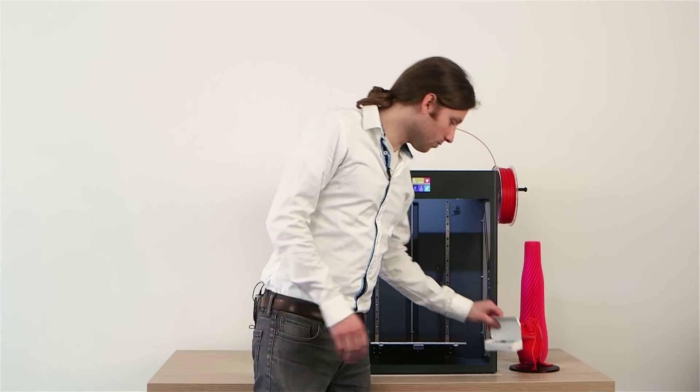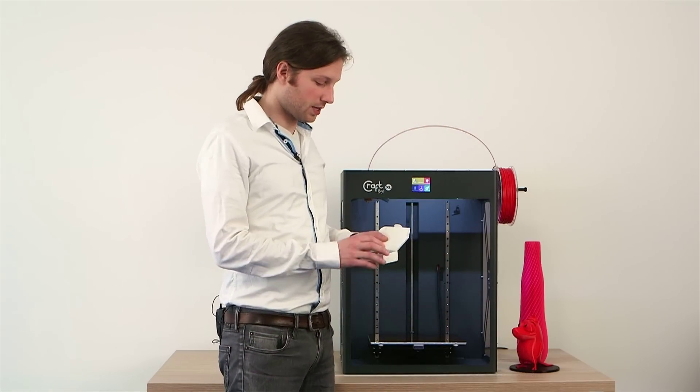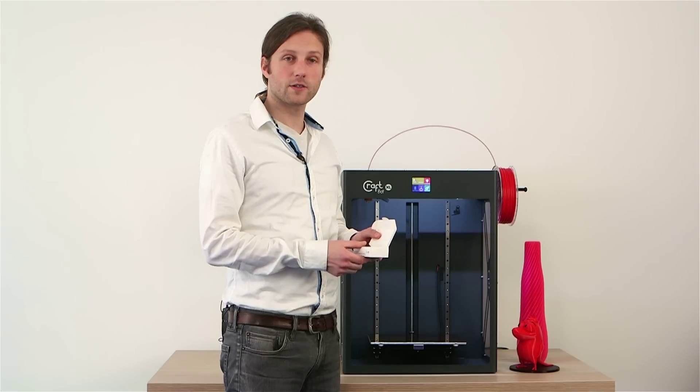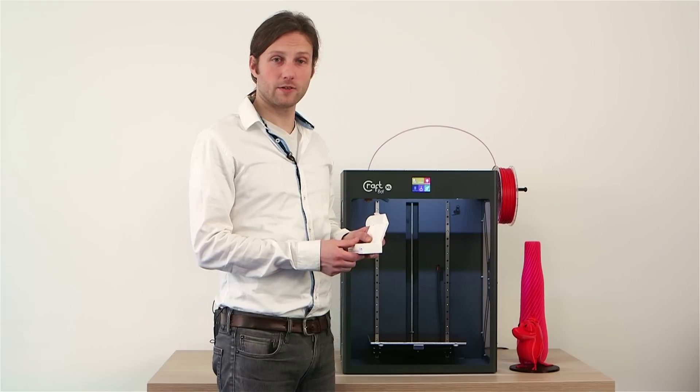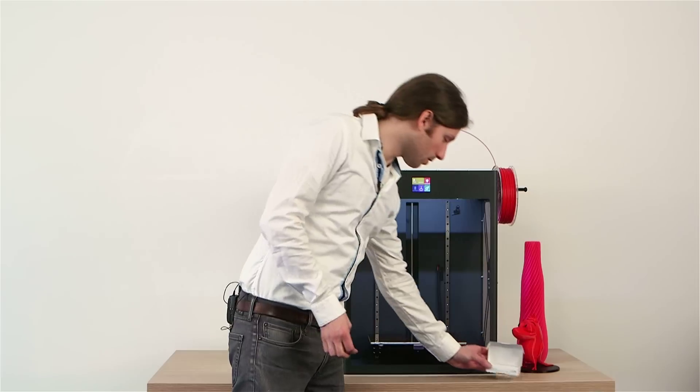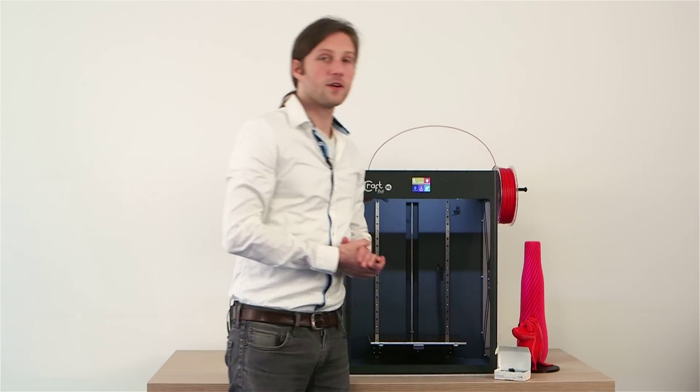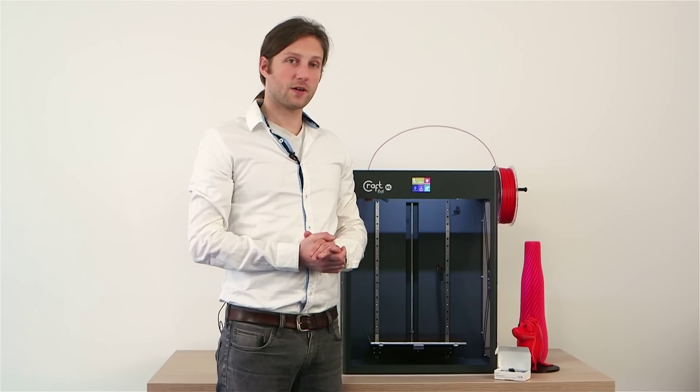We have a new set of nozzles that comes with the machine. We have four new nozzles: 0.25, 0.4, 0.6, and 0.8 mm. And with the smallest nozzle, the 0.25, you can actually print 50 microns per layer.